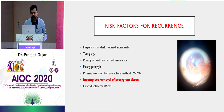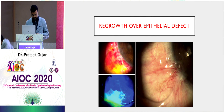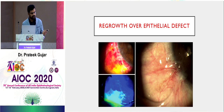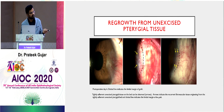There are three morphological patterns of recurrence: first, regrowth over an epithelial defect — if you leave bare sclera, pterygium can grow from that area again. Second, transformation of conjunctival graft into pterygium tissue. Third, leaving unexcised tissue that causes proliferation again. All these causes can lead to recurrence, so surgical technique must include meticulous pterygium excision along with grafting.